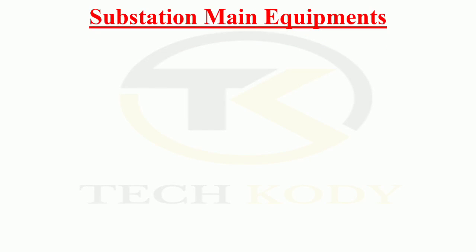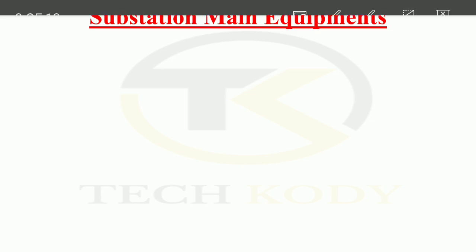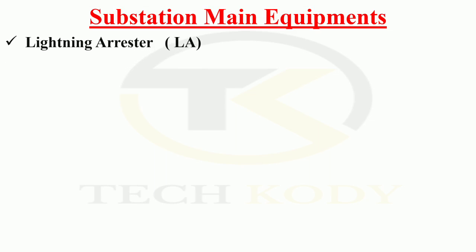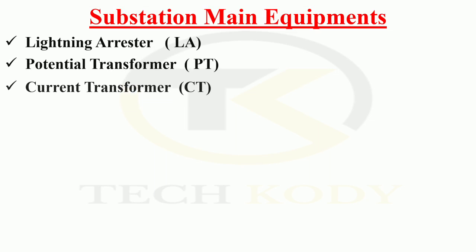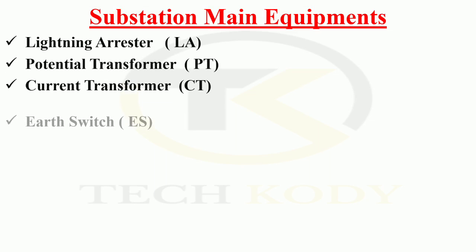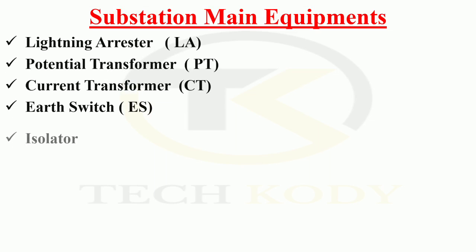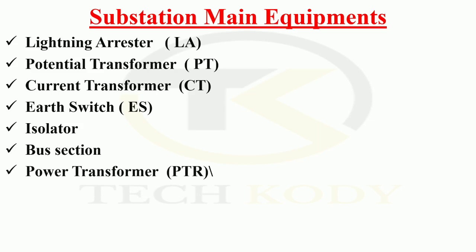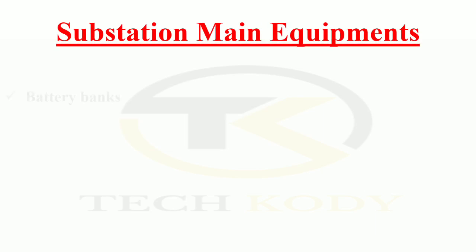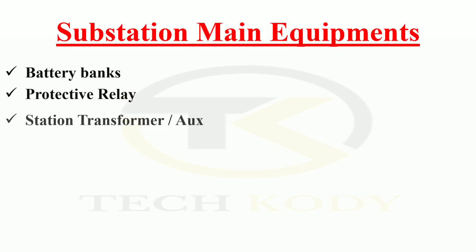The main equipment of the substation are: lightning arrester (LA), potential transformer (PT), current transformer (CT), earth switch (ES), isolator, bus section, capacitor bank, battery banks, protective relay, and station transformer or auxiliary transformers.